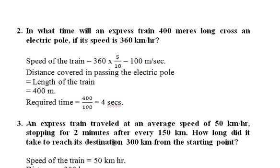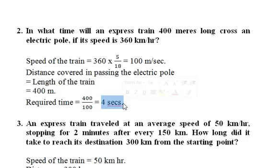Second question: In what time will an express train 400 meters long cross an electric pole if its speed is 360 kilometers per hour? The speed 360 km/h is converted to meters per second by multiplying by 5/18, giving 100 meters per second. The distance covered in passing the electric pole is only the length of the train — no platform is added since it is just crossing a pole. So 400 divided by 100 gives 4 seconds as the time taken to cross the electric pole.